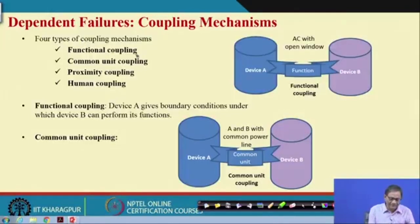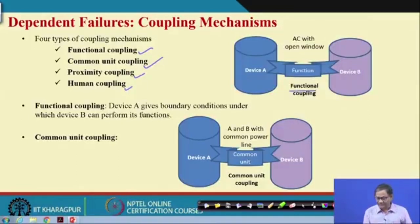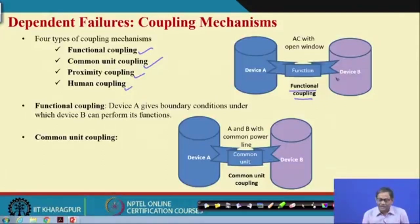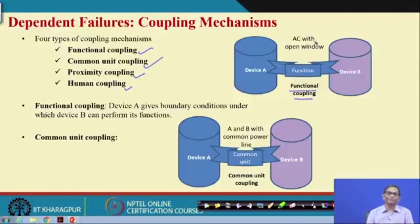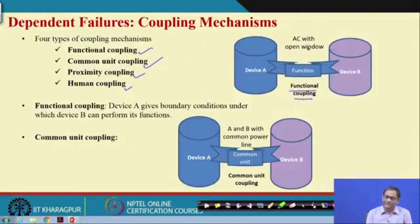Under coupling mechanisms there are: functional coupling, common unit coupling, proximity coupling, and human coupling. Let us understand what functional coupling is. Suppose there are two devices — for example, an AC that works only when a window is closed. If the window is open, the AC will not work. Under such conditions, device A and device B will not work, and we say that is functional coupling.